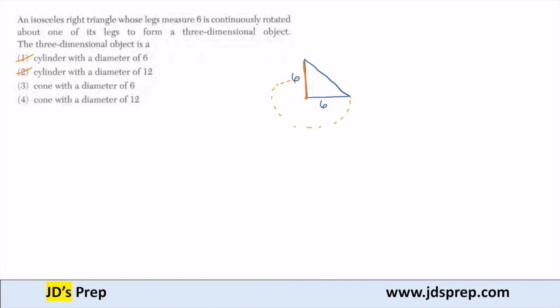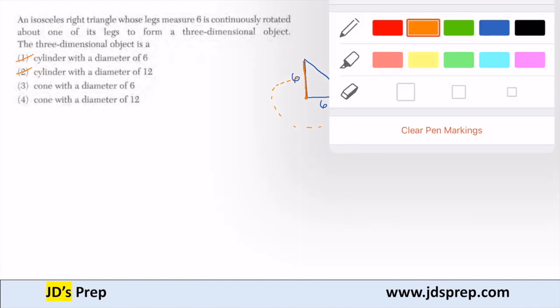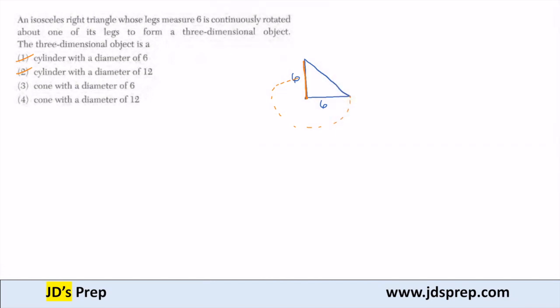Now, if I look at my object here, because I'm spinning it, look at where the center is. The center is right at that vertex of the triangle, which has a leg of 6. When I spin, that leg now is the radius of my circle.